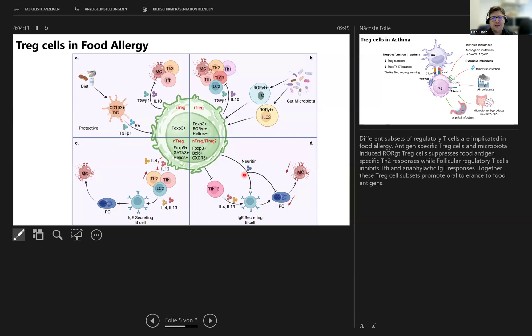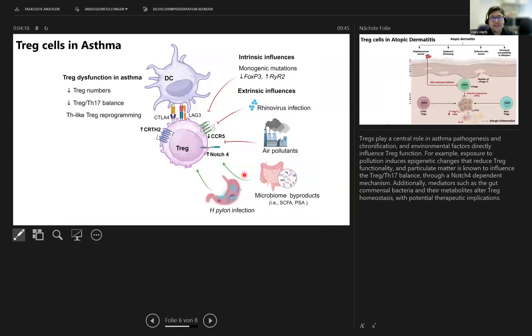While follicular regulatory T-cells inhibit TFH and anaphylactic IgE responses. Together, these T-reg cells promote oral tolerance to food antigens. On the other side, T-reg cells play a very central role in asthma pathogenesis and chronification, and environmental factors directly influence these changes: air pollution, microbiota, and infections.